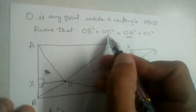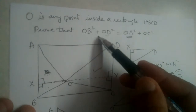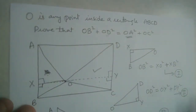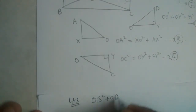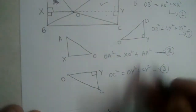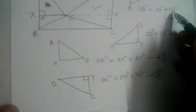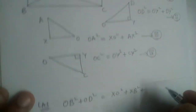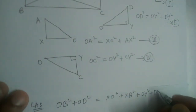What do we need? The LHS is OB² + OD², so there is a plus sign — we should add equations one and two. OB² + OD² = XO² + XB² + OY² + DY².